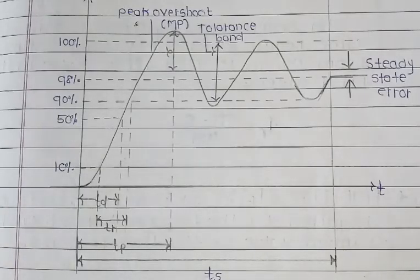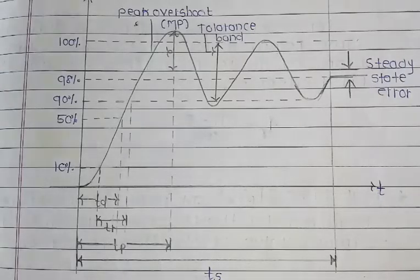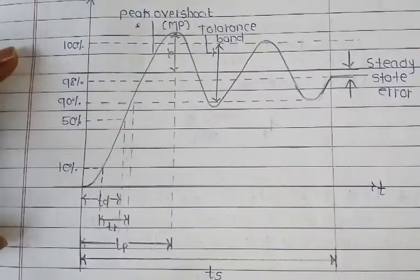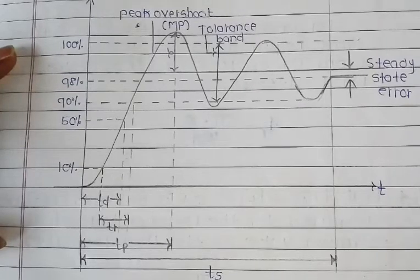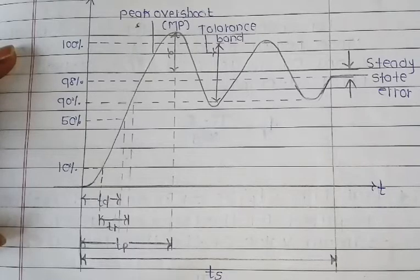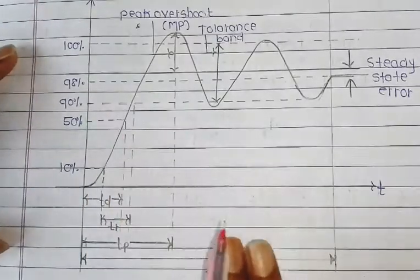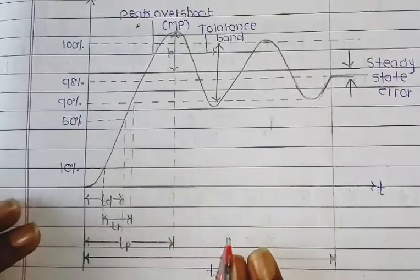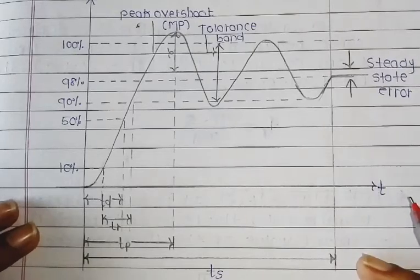Hello students, today we see the next topic: time response specification, or transient response specification. This is a very important topic from an exam point of view. In this diagram of time response specification, there are six different parameters that we have to study.